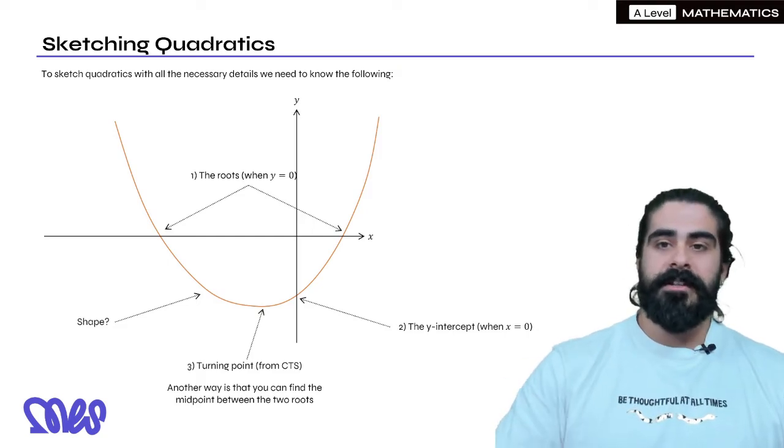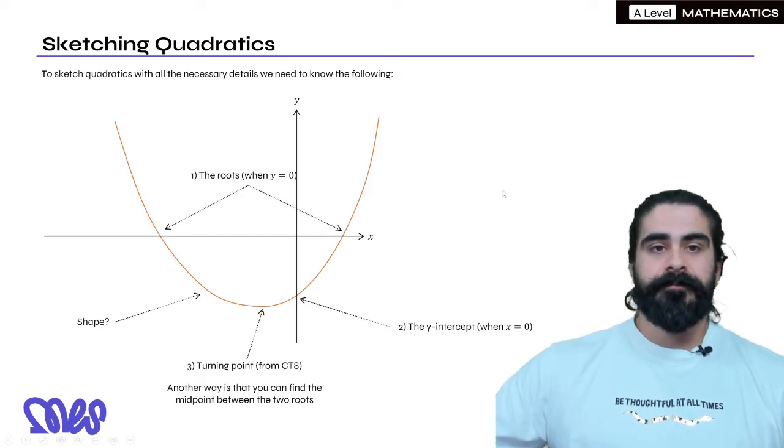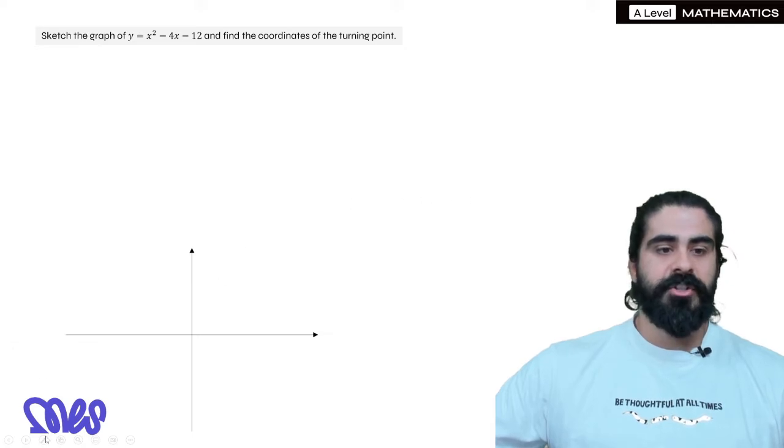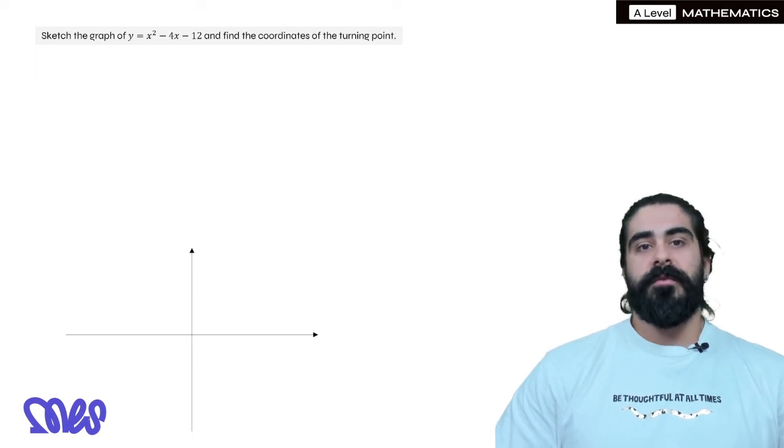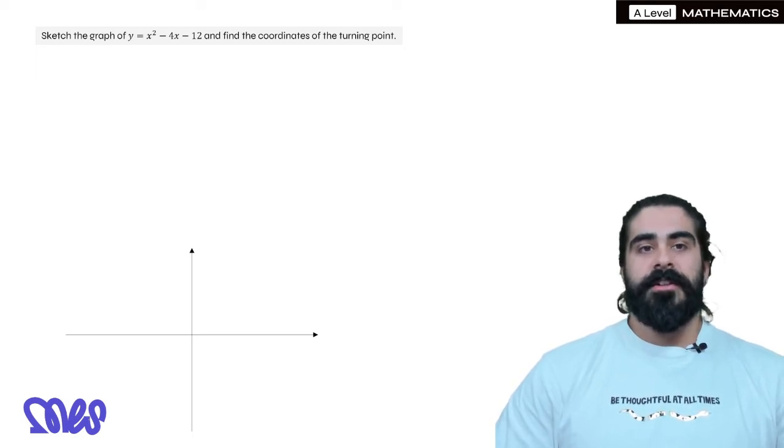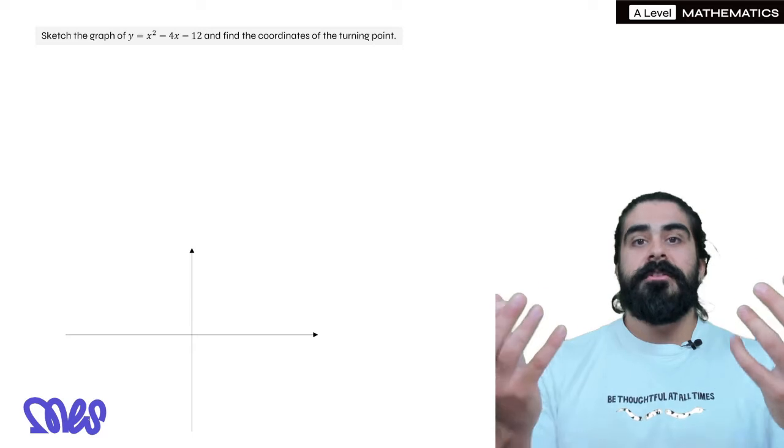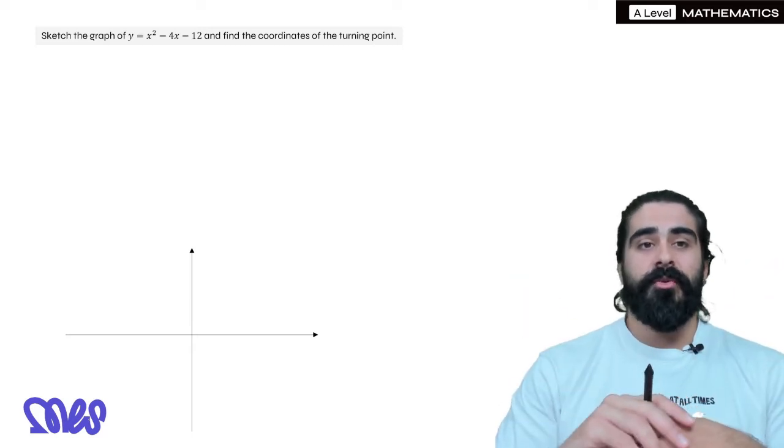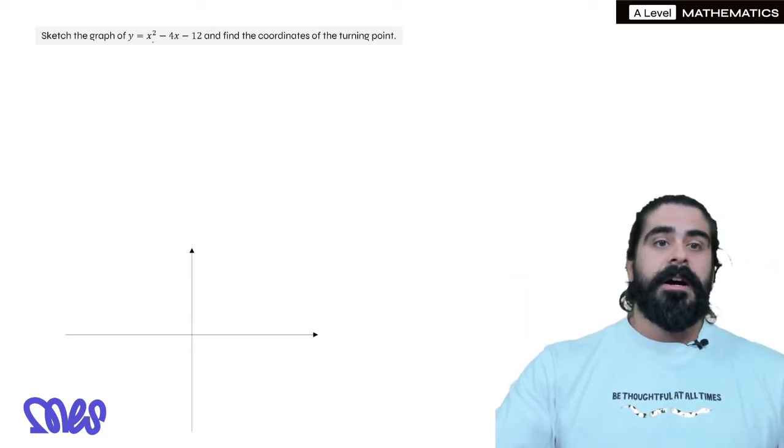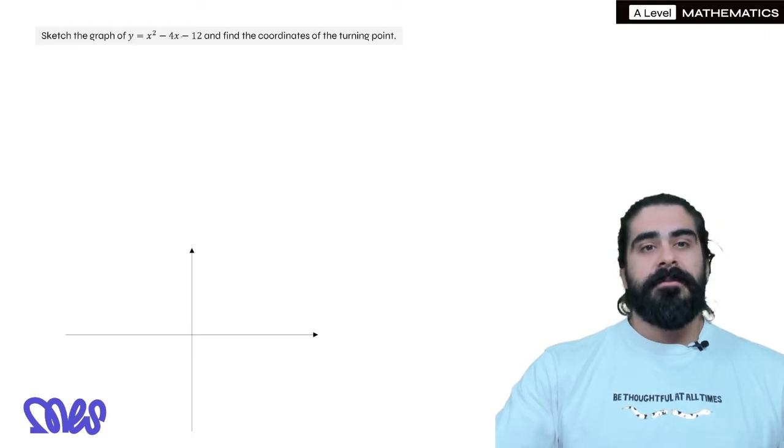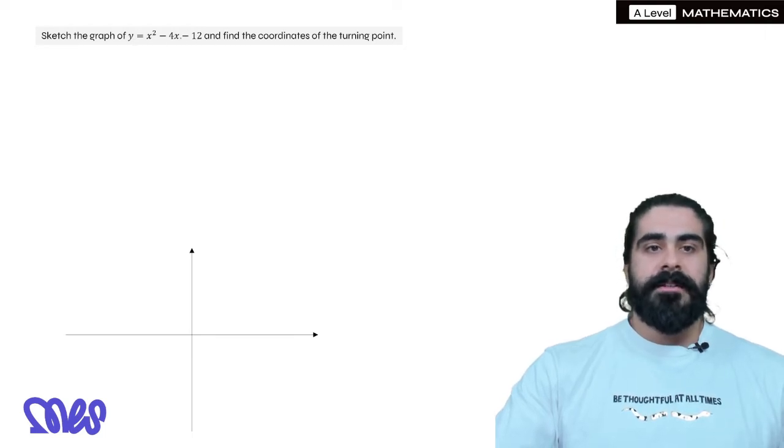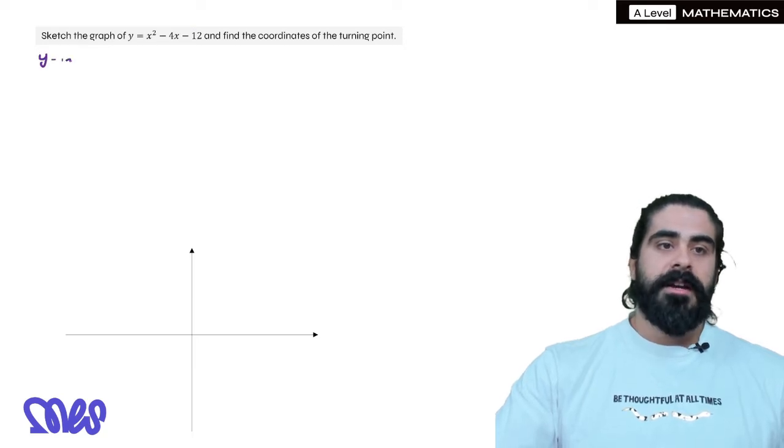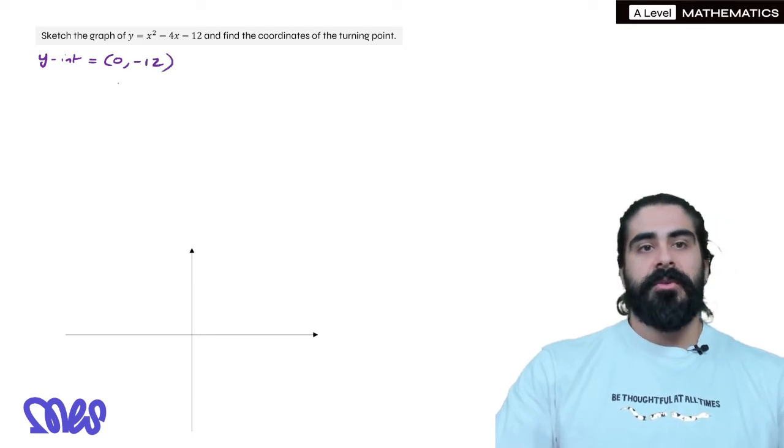So question one, practicing this skill, is to sketch the graph of y equals x squared minus 4x minus 12 and find the coordinates of the turning point. Interestingly, completing the square actually answers all of this, so I'm going to do that first. In fact, first I'm going to write down what the y-intercept is. So the term independent of x is minus 12, so the y-intercept here is 0 on the x, minus 12.